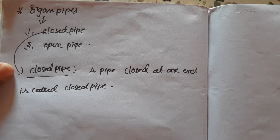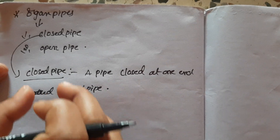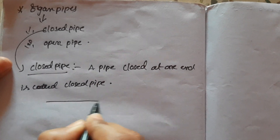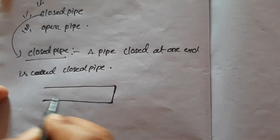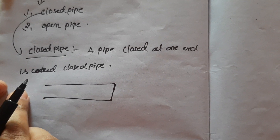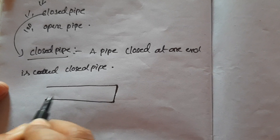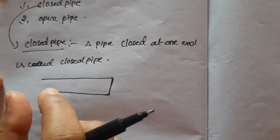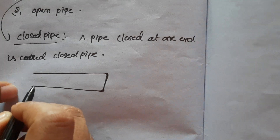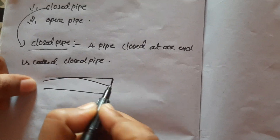Now we are going to talk about the organ pipe. This is the closed pipe. We are going to see the sound produced from this one. The sound is produced, and this one is the sound wave — it is the result of the sound wave.